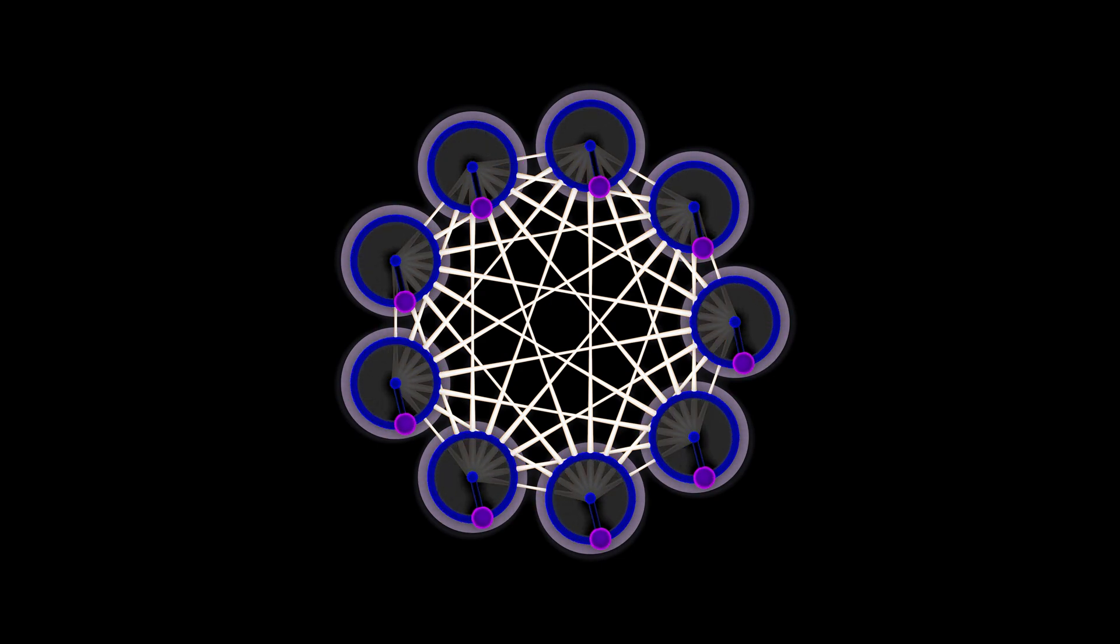If you use the type of coupling function that encourages consensus, then the entire system will synchronize. The state difference, the phase angle between all these spinners, is going to go to zero, and that is going to be a stable equilibrium for the entire system. Very well.